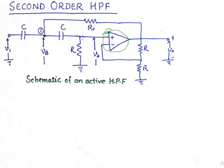That is a good way of remembering the configurations or the schematics for the examination point of view. If you know the schematic of a second order low pass filter, you simply need to replace these capacitors with resistances and these resistances with the capacitors.